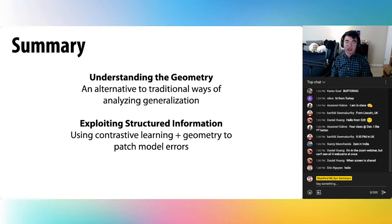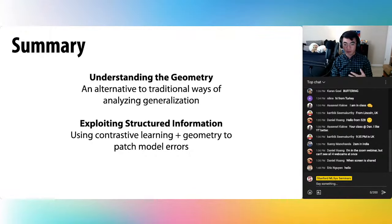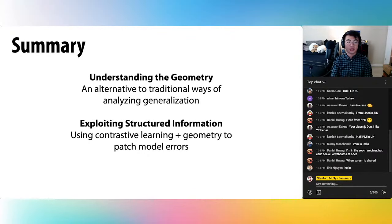Taking a step back, our key lessons from this line of work: first, from part one, we were interested in looking at contrastive loss from a geometric perspective as an alternative to traditional ways of thinking about generalization — instead of looking at model size and generalization error, we look at what happens to the geometry as you train, and we're curious whether we can apply these ideas to even bigger foundation models. Second, we were exploiting structured information to patch model errors — using our understanding of the geometry that contrastive learning encourages to improve model performance, which we did explicitly with entity types in Tabby.